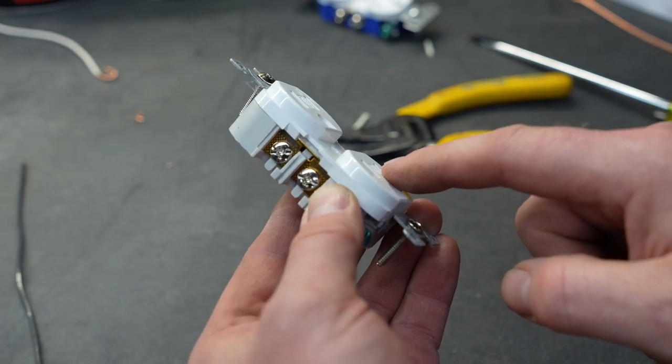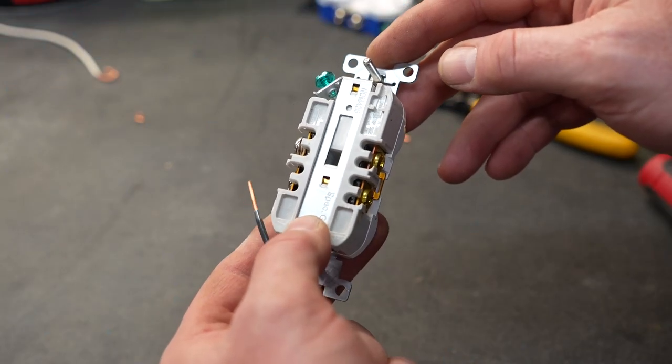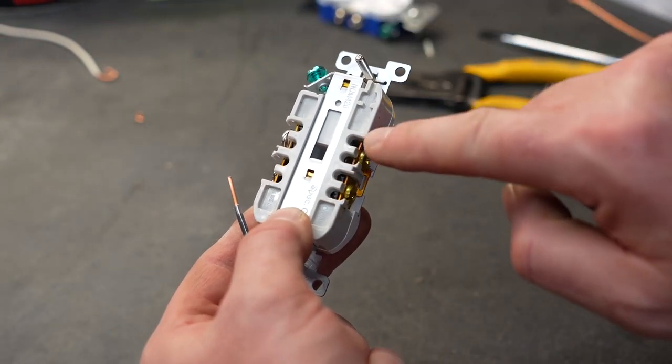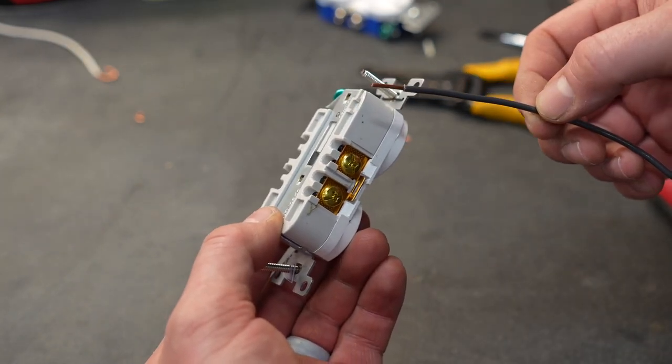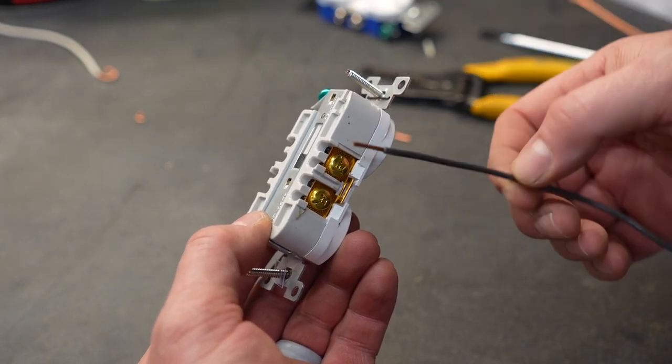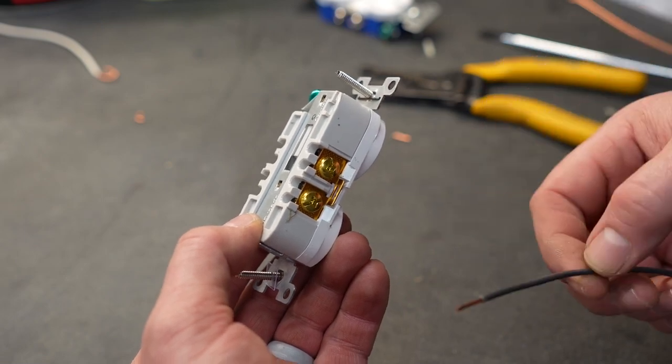However, this particular outlet costs $5. They are my favorite outlets to use because they have a feature called side wiring. Side wiring works very similar to backstabbing, except it has a whole lot better of a friction hold than the backstabbing feature.